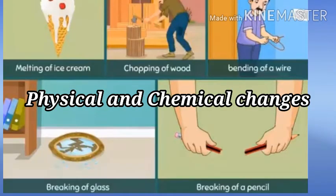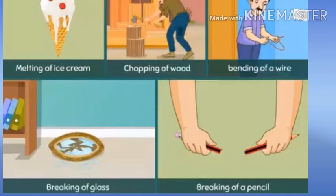Physical and chemical change. To understand the difference between a pure substance and a mixture, let us understand the difference between physical and chemical change. In day-to-day life, you see many things like melting of ice, chopping of food, bending of wire, breaking of glass, and breaking of a pencil. These are all physical changes.